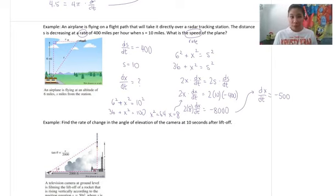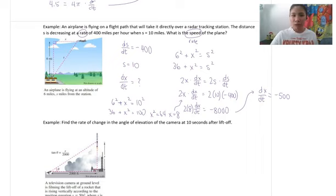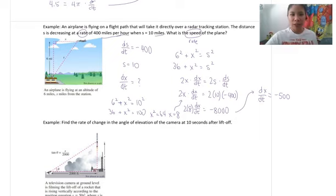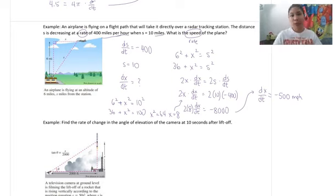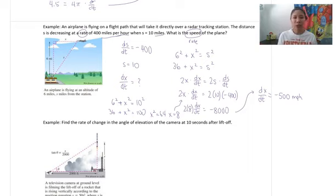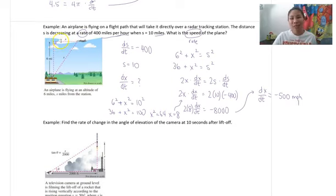Dividing both sides by 16 gives dx/dt equals negative 500. For units, the problem was talking about miles per hour, so negative 500 is in miles per hour. The negative part might seem awkward because negative speeds don't make sense, but looking at the picture, the plane is going toward the left. On a graph, negative corresponds to the left side. So the plane is going 500 miles per hour to the left.